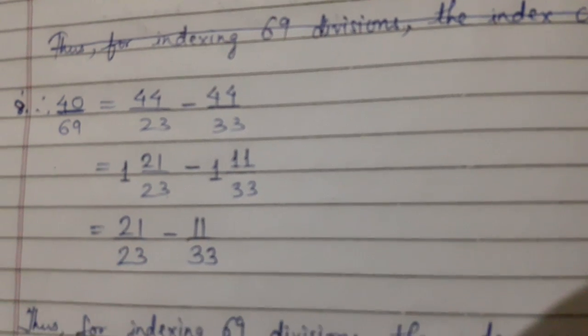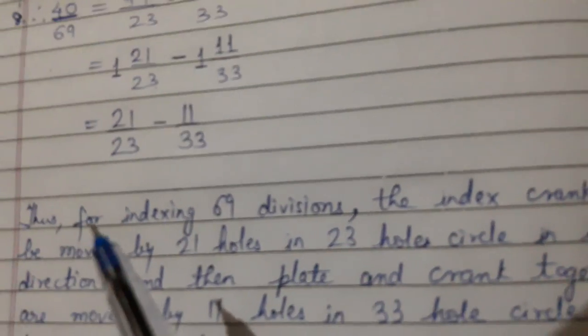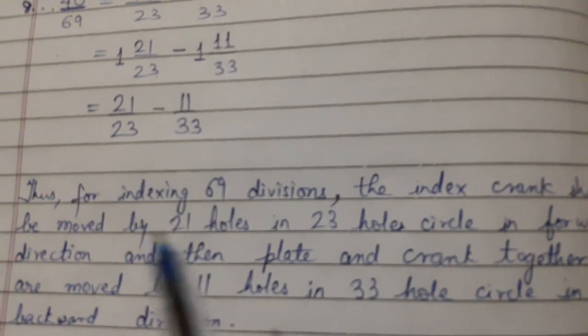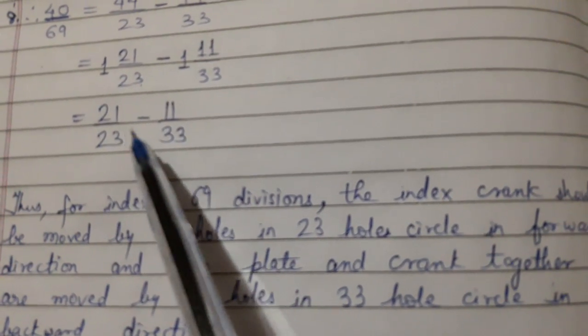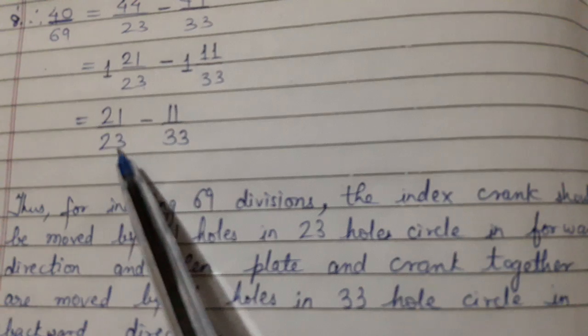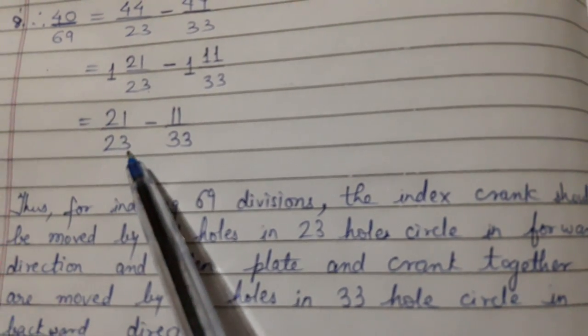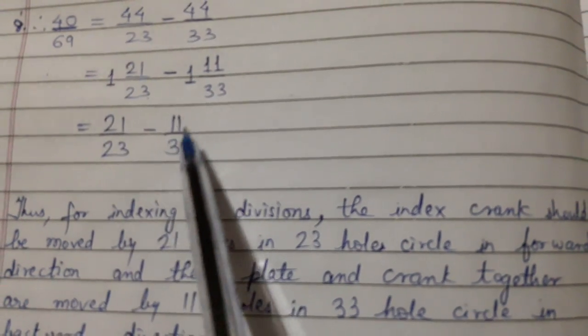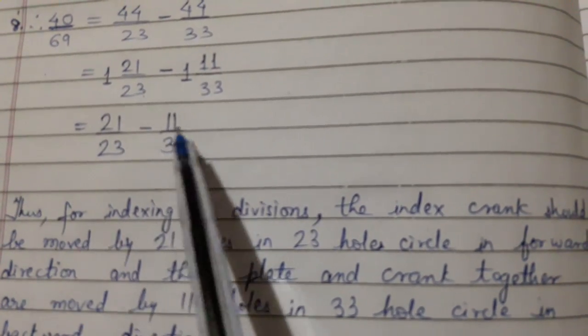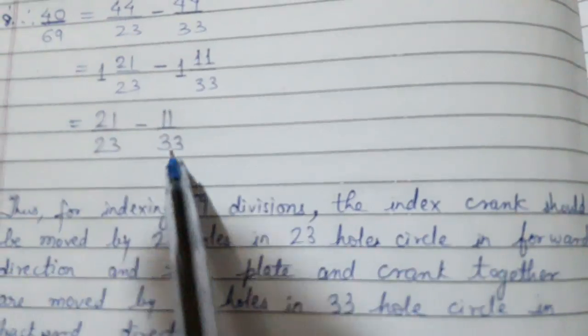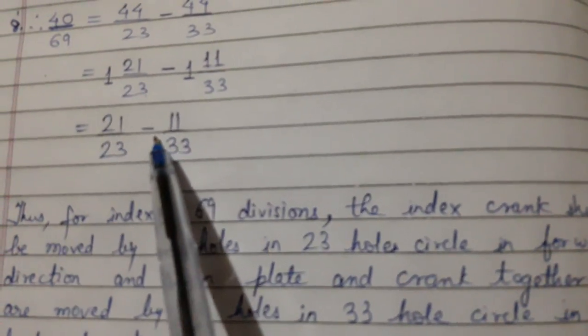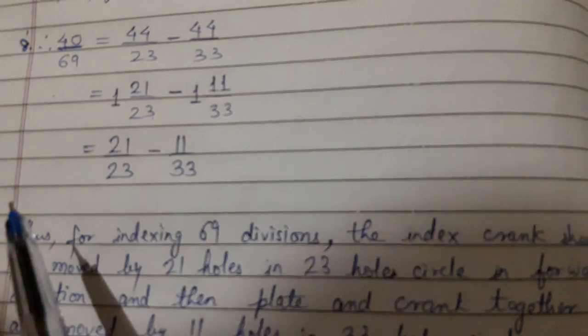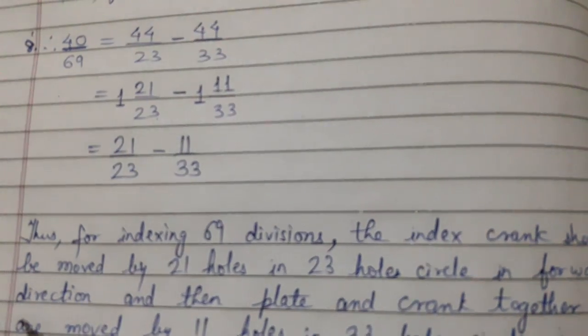With this we have got now for indexing 69 division, the index crank should be moved by 21 holes in 23 hole circle in forward direction because it is positive, and then plate and crank together are moved by 11 holes in 33 hole circle in backward direction because here it is negative. So this is the procedure for indexing by compound indexing.